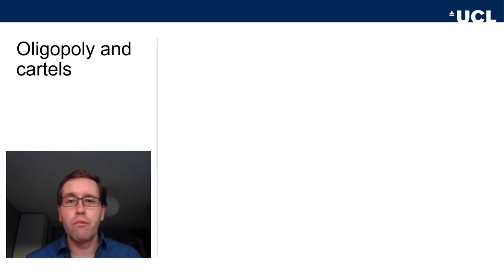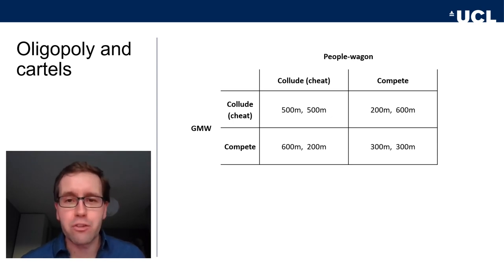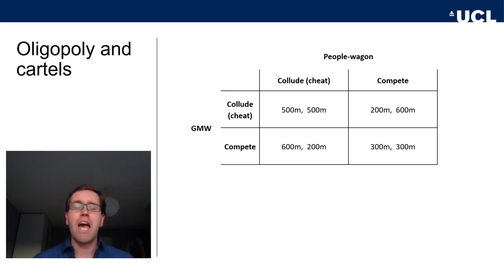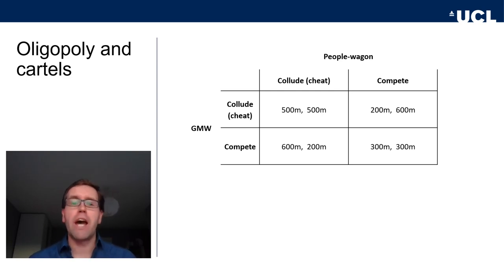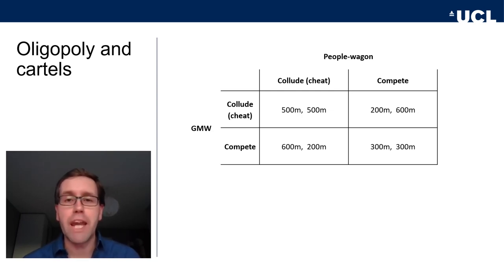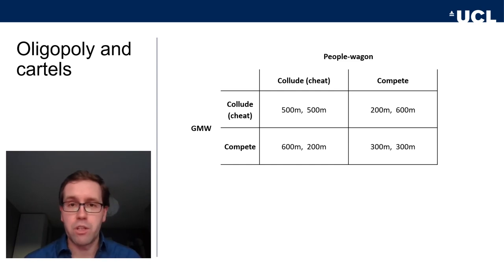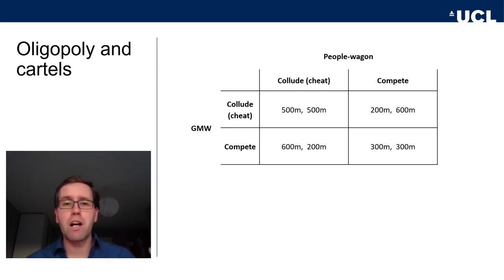Let's look at a fictional example. There are two car manufacturers: PW (People's Wagon) and GMW (German Motor Works) — the only two car producers. The total value of the market is 1 billion. If they both collude, share the market, and don't invest in clean technology, they both earn 500 million in profit. So if they both collude and the market is roughly 50-50, they each get 500 million in profit.